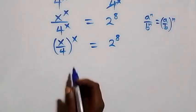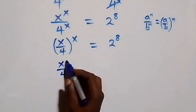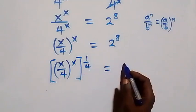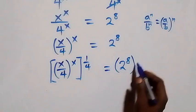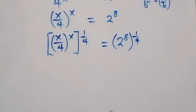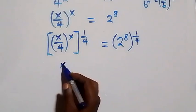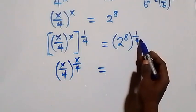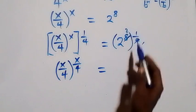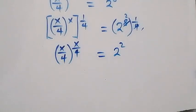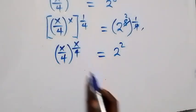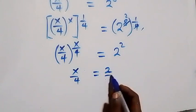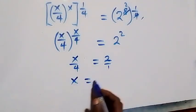Next, we multiply both sides by the power of one over four. So x over 4 raised to power x, then raised to power one over four, equals 2 raised to power 8, then raised to power one over four. From the law of indices, the powers multiply, giving x over 4 raised to power x over 4, equals 2 raised to power 2. When we compare, the base equals the power on both sides, so x over 4 equals 2, which means x equals 2 times 4, that is x equals 8.